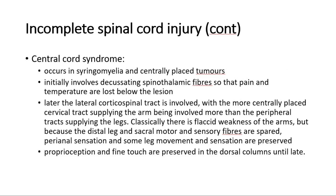Second is central cord syndrome. This occurs in syringomyelia and centrally placed tumors. It initially involves decussating spinothalamic fibers, so that pain and temperature are lost below the lesion. Later the lateral corticospinal tract is involved, with the more centrally placed cervical tract supplying the arm being involved more than the peripheral tracts supplying the legs. Classically there is flaccid weakness of the arms, but because the distal leg and sacral motor and sensory fibers are spared, perianal sensation and some leg movement and sensation are preserved. Proprioception and fine touch are preserved in the dorsal columns until late.